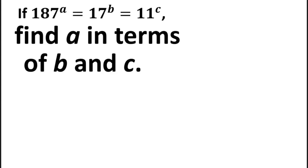Welcome to Otis and Mathematics. In this video, we are to find A in terms of B and C, given that 187 raised to the power A is equal to 17 raised to the power B, which is equal to 11 raised to the power C. So let's see how we are going to solve this question.